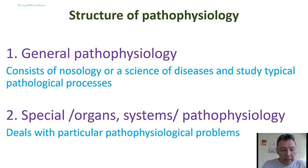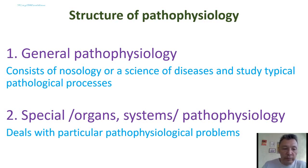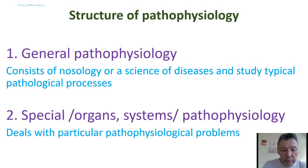The structure of pathophysiology: the main parts are general pathophysiology and special pathophysiology. The first part is the science of disease. The second part includes typical pathological processes — information about processes which underlie numerous pathological conditions. The third part deals with particular pathological problems, where students study separate organs and systems.